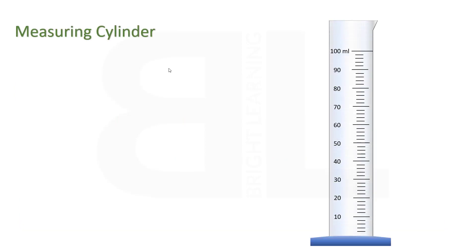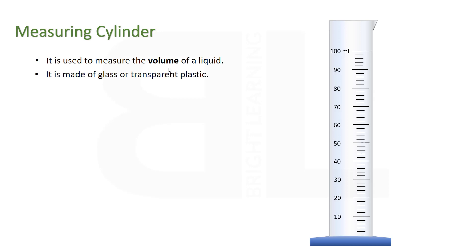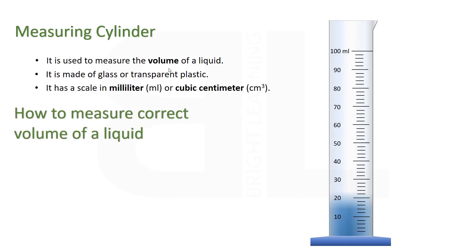Measuring Cylinders. These cylinders are usually used to measure the volume of a certain liquid. They are made up of glass or transparent plastic and are graduated with different scales such as milliliters or cubic centimeters.